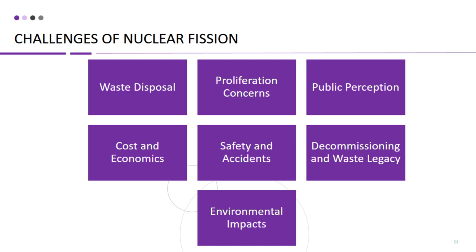While nuclear power plants have multiple safety measures in place, the potential for accidents or incidents, although rare, remains a concern. Accidents at nuclear power plants, such as the Chernobyl and Fukushima disasters, have had severe consequences, including loss of life, environmental damage, and economic impacts. Ensuring the highest level of safety in the design, operation, and maintenance of nuclear power plants, and addressing human factors, equipment failures, and natural disasters that may lead to accidents, is a continuous challenge.